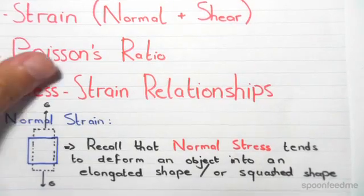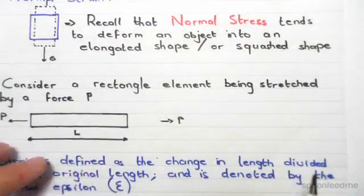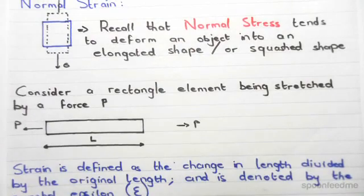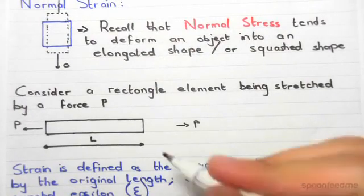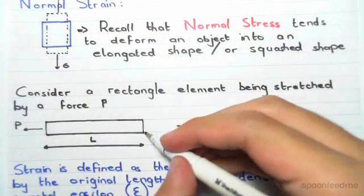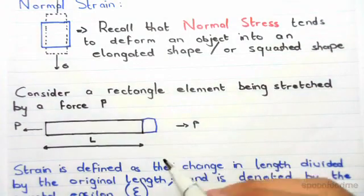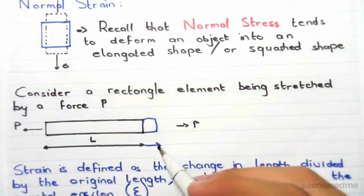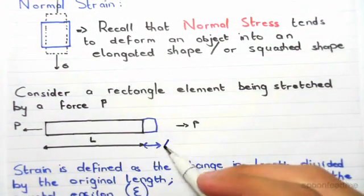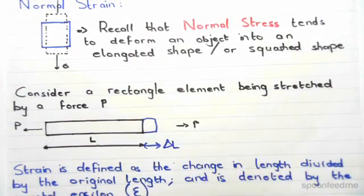Now consider a horizontal rectangle element being stretched by a force P. If we stretch this, we are going to have an additional length due to stretching, which is this little blue region, and we can call this delta L.